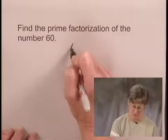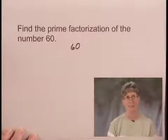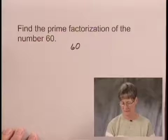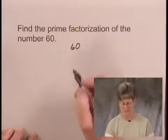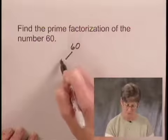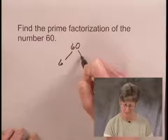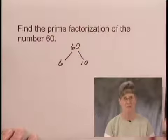To do that, we'll start with the number 60 and write any two factors of 60 that occur to us. Let's use the factors 6 and 10, and we'll branch off from 60 with a factor of 6 and a factor of 10.